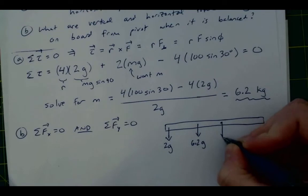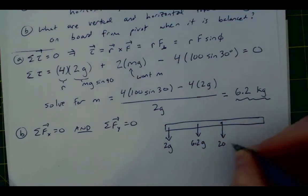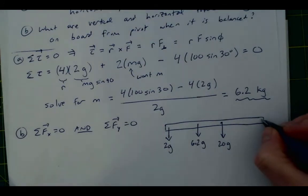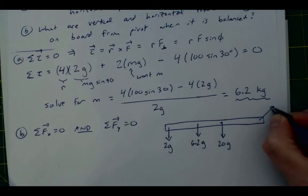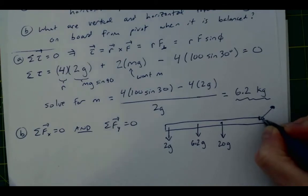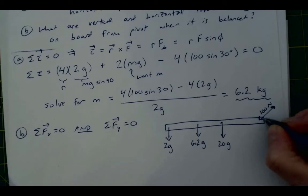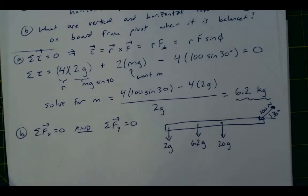We know that the mass m that we just solved for is gonna be 6.2 times g, for mg for that. And then at the pivot, we have the downward force of the weight, which would be 20 times g, for 20 kilograms times g. And then we have our force, sorry, acting at an angle downward. That was 100 newtons acting at 30 degrees.